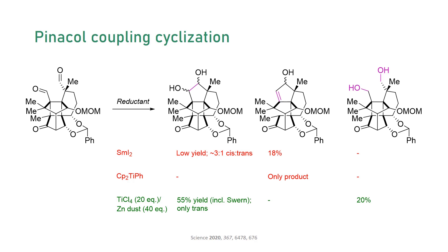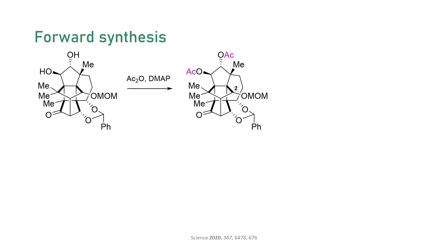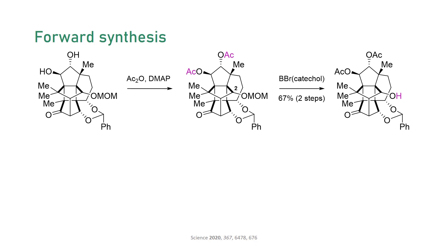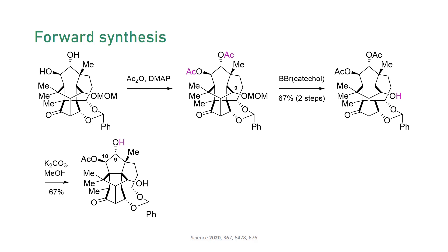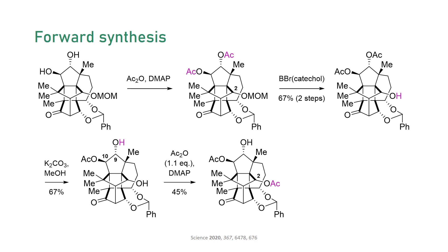To complete the synthesis, they only had to introduce the acetylation pattern in the natural product and remove the protecting groups. They exploited the inherent reactivity and sterics of the molecule: first, a double acetylation of the pinacol product and deprotection of the MOM group at C2. Selective mono-deprotection of the acetate at C9 was possible under mild conditions, leaving the acetate at C10 intact. Then, they selectively acetylated the hydroxyl group at C2, which favored this more reactive site over the C9 position. Finally, hydrogenation of the acetal released the monstrous Canataxpropellane.